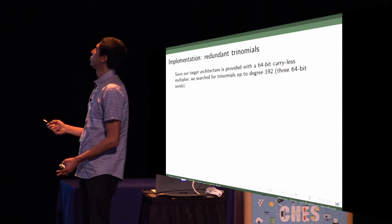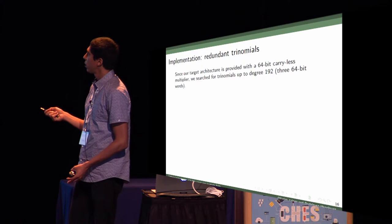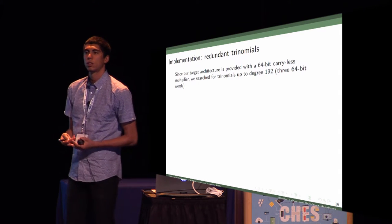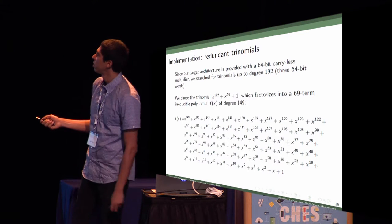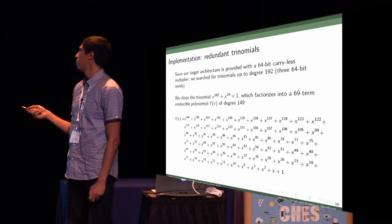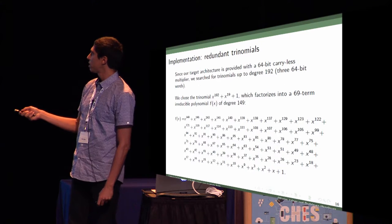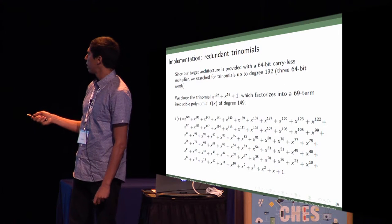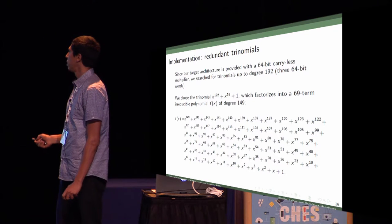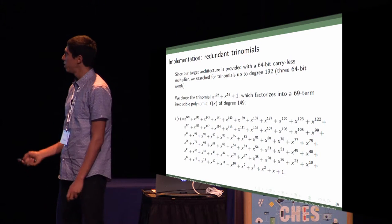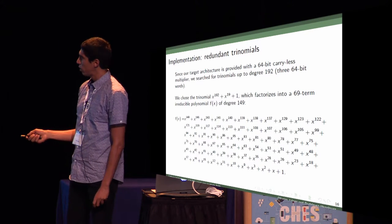Since we have 64-bit carryless multipliers, we have to search trinomials up to degree 192, which provides three-word multiplication. We found this trinomial X to the power of 192 plus X to the power of 19 plus 1. This polynomial factorizes in this 69-term reduced polynomial F(X). This is very costly to reduce. You need to spend too many clock cycles reducing this polynomial.